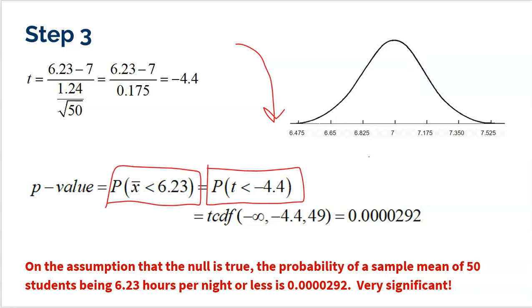And that is how we get the 0.0000292. So that is how I got that p-value. Now, that is pretty low, guys. What I'm saying is that the probability of a sample of 50 students being 6.23 hours per night of sleep or less is unbelievably low. The probability of this sample happening is low, meaning it shouldn't be happening.